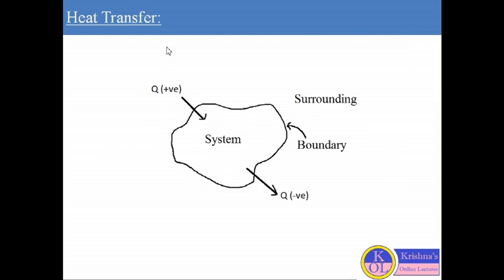If we consider any non-adiabatic system, that system always depends on the temperature of its surroundings, and the work of that system always depends on the path as well as the end conditions of that process. In non-adiabatic processes, some other type of energy transfer also occurs because of temperature difference. Because of the temperature difference between the system and surroundings, this energy transfer is generally called heat. The heat always flows from higher temperature to lower temperature.